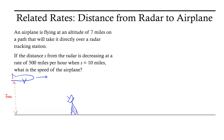The distance between the plane and the radar is decreasing at a rate of 500 miles per hour. We'll call that s. That means the rate of change of distance with respect to time, ds/dt, is negative 500 miles per hour. It's negative because we know that distance is decreasing. If the distance were increasing, it would be a positive quantity.